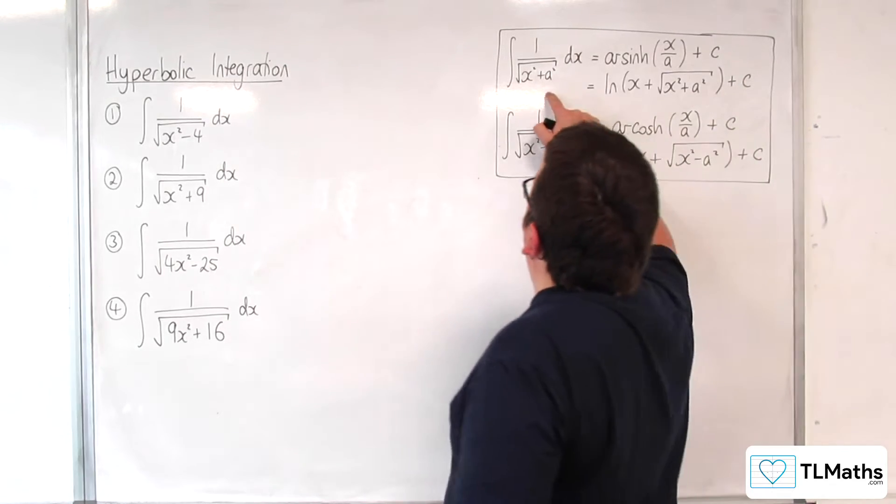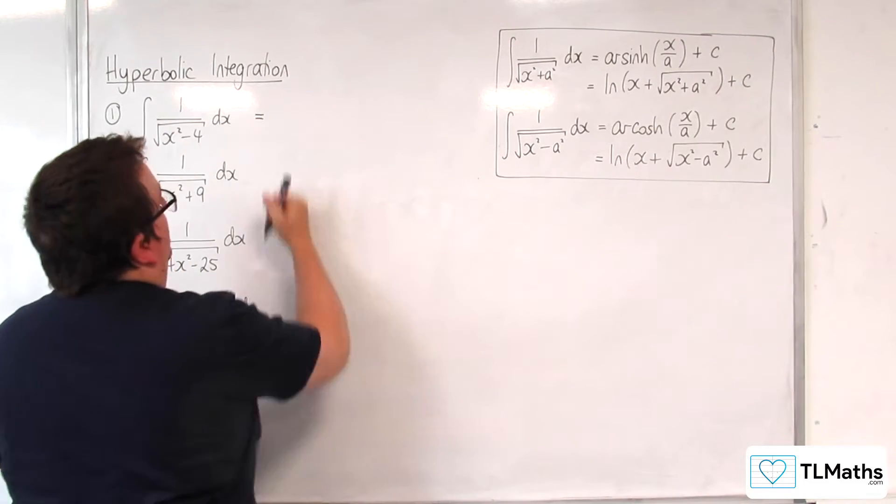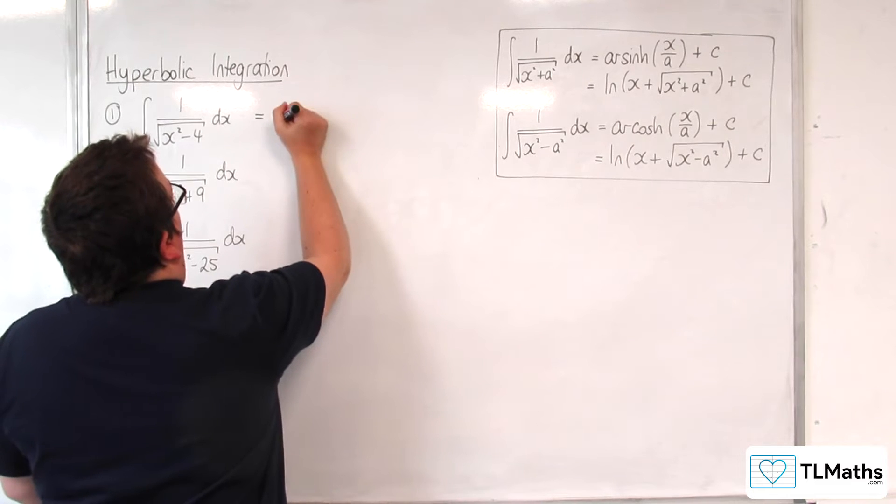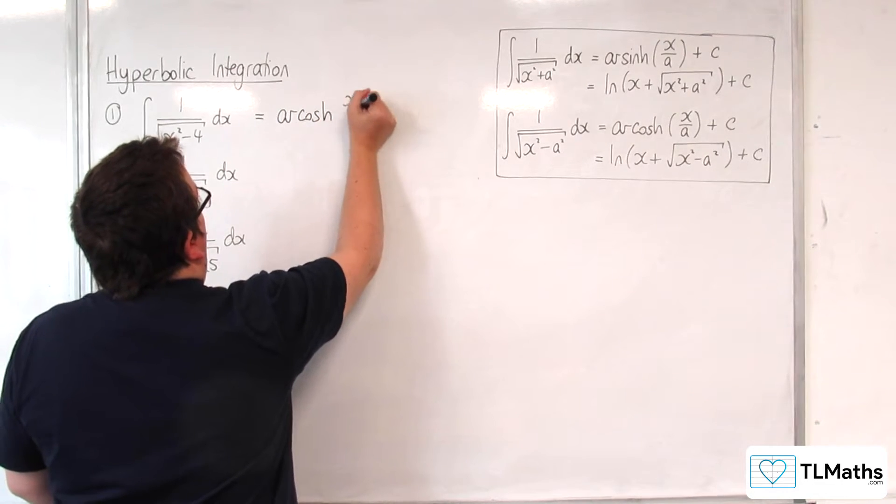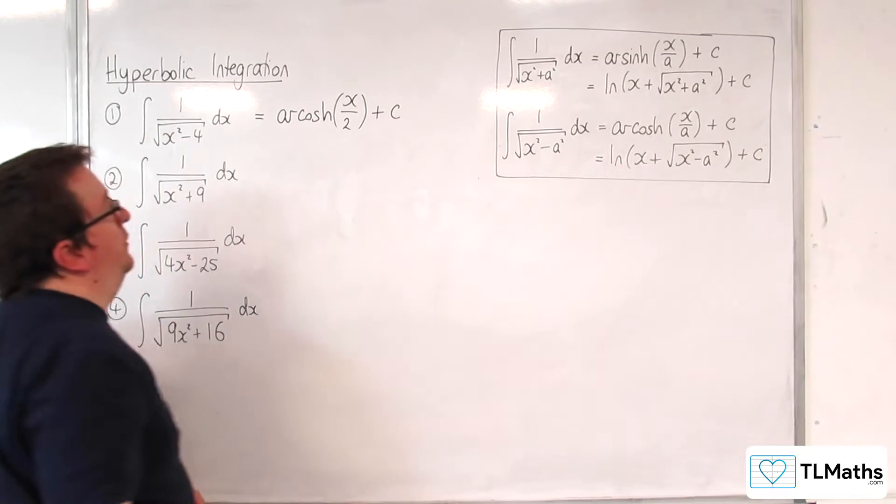You want to look for the particular form that we need, which is this one. So this is going to be equal to, now the a here is clearly going to be 2, so arcosh of x over 2 plus some constant c.